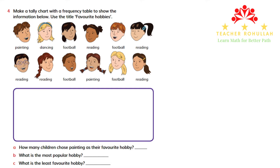The question says: make a tally chart with a frequency table to show the information below. Use the title 'Favorite Hobbies.'